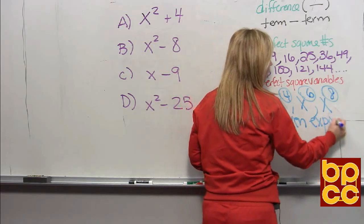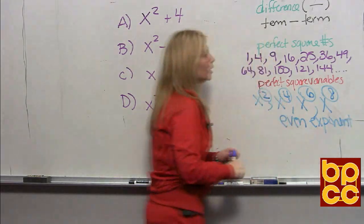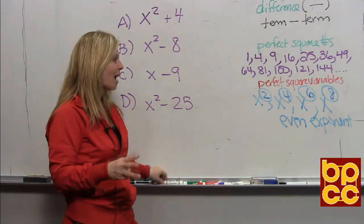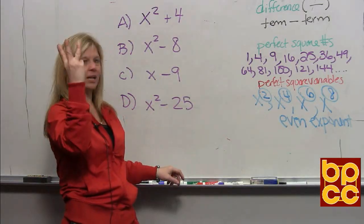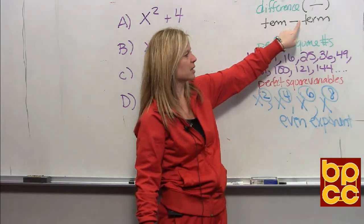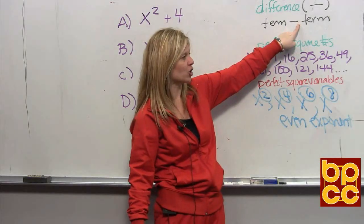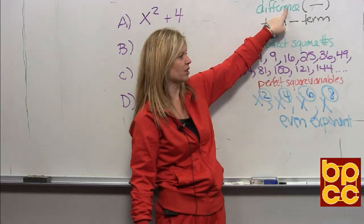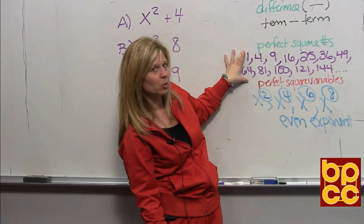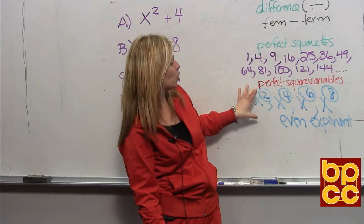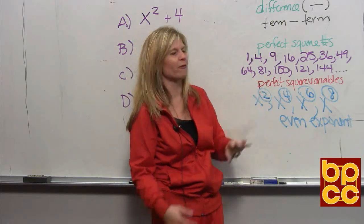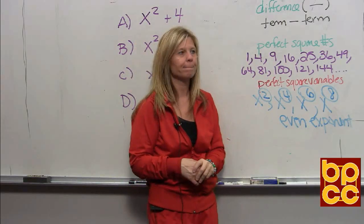So, to learn today's rule, before you can even do it, you have to look for three things. You must have a binomial connected by subtraction — that's what the difference means. You must have a number that's a perfect square. And you must have a variable with an even exponent, because it's a perfect square.